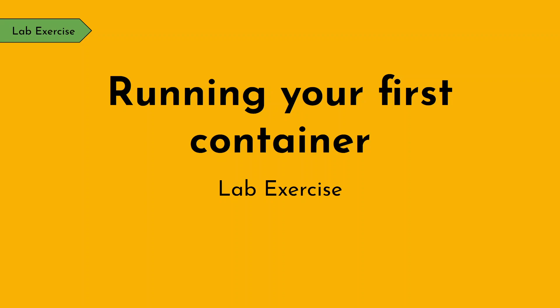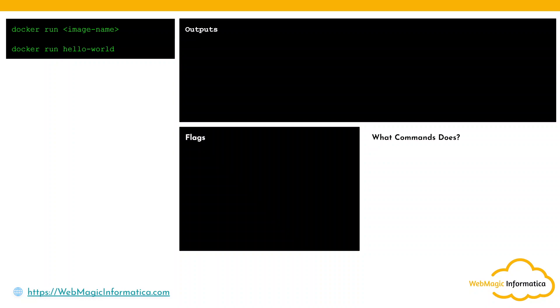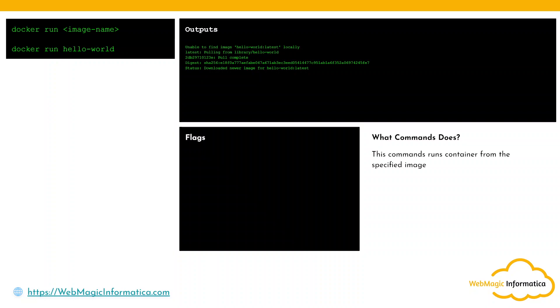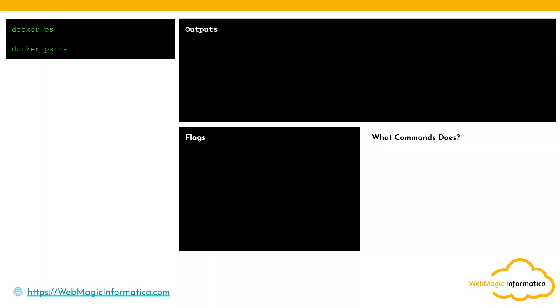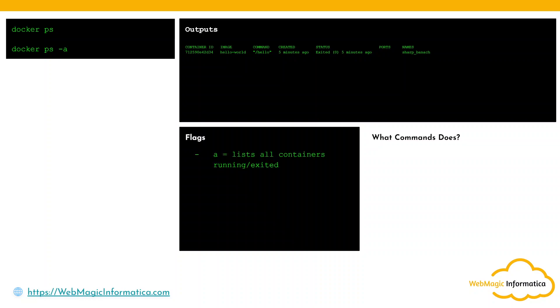In this lab exercise we will create our first container. The basic command is `docker run <image_name>` — for example `docker run hello-world`. It looks for the image locally; if not found, it downloads from Docker Hub and runs the container. `docker ps` shows only running containers, while `docker ps -a` shows all containers including exited ones. `docker run -itd` creates a container in interactive and detached (background) mode so you can log into the container shell.